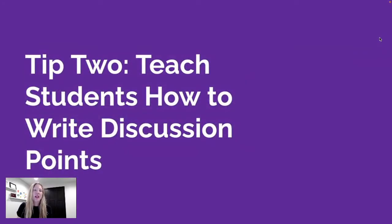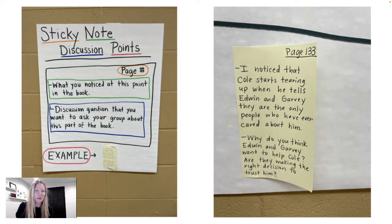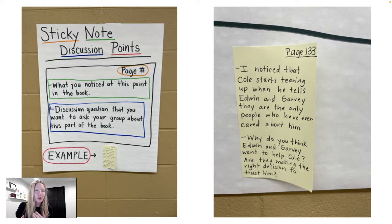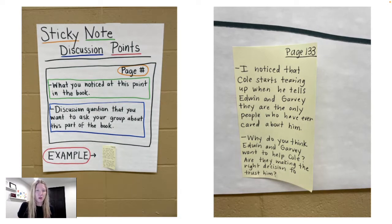Tip number two is to teach students how to write really engaging discussion points. A format I use is to start by always writing the page number on the sticky note and sticking it on the spot in the book where it belongs. That double assurance makes sure we know where we're talking about so all students can turn to that page. The next part is what you're noticing about that part — why did you stop and make a discussion point? And the third part, which students often forget, is to actually ask a discussion question.